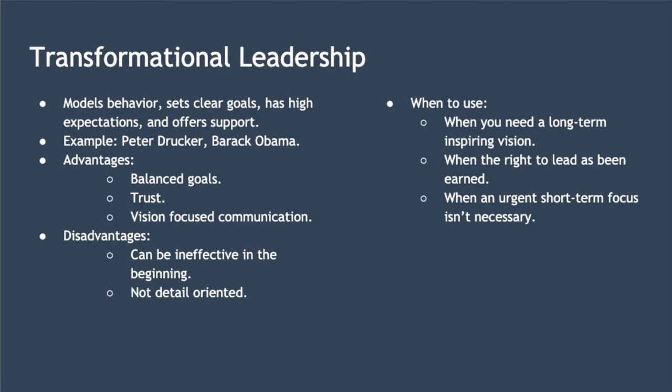Examples of transformational leaders include Peter Drucker and Barack Obama. Transformational leaders are sometimes known as quiet leaders, known for a willingness to lead by example. They often don't make detailed strategic plans, but instead facilitate conversations between key people both within and outside of their organisation. Advantages include balanced goals — they balance short-term and long-term needs. There is a lot of trust, as subordinates feel supported and deeply trust their leader due to their integrity and strong coalitions. They also communicate vision with passion and clarity, keeping everyone bought in and motivated to reach that vision.